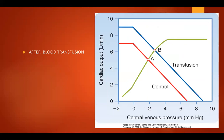This is another example of the control of blood volume on cardiac output and CVP. If there is hemorrhage, there is lower CVP and lower cardiac output. After transfusion, CVP and cardiac output also increase.